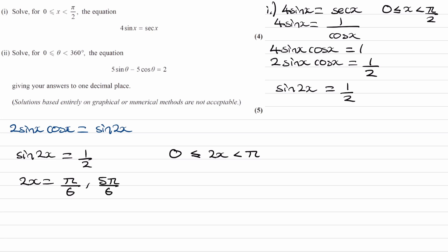From pi over 6 and 5 pi over 6, we then add or subtract 2 pi as needed to find all other angles in our domain. However, adding 2 pi to either of these angles would take us outside the transformed domain, so we stop there. Dividing both by 2, we end up with pi over 12 and 5 pi over 12 as our final answer for part 1.